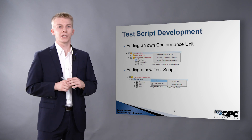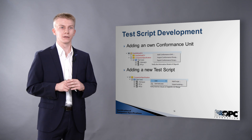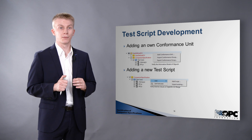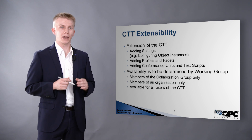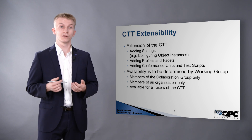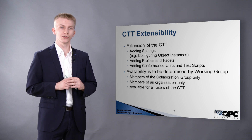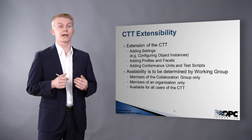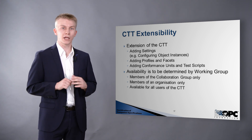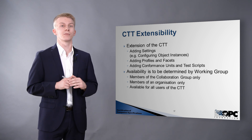Test scripts can easily be integrated into the compliance test tool. For a conformance group you can add your own conformance unit, export existing ones, and import new conformance units. The same way you can add new scripts to it. The CTT can be extended with additional settings like configuring object instances, or configuring minimum and maximum values that might be more restrictive than the companion specification itself. You can also add profiles, facets, conformance units, and test scripts. These extensions are the responsibility of the collaboration group, and we understand they need to be able to define whether developed extensions are accessible to everybody, just members of an organization, or only members of a collaboration group.